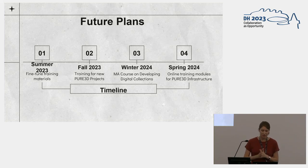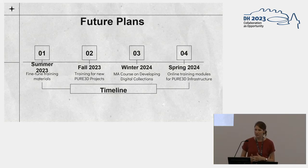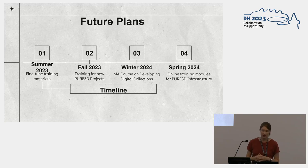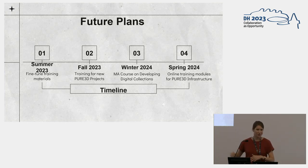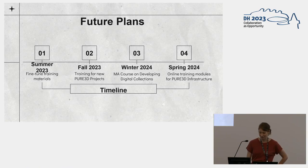Future plans for training include fine-tuning training materials and workshops for the new set of Pure3D editors, as we have a call for new 3D projects. We are conglomerating knowledge about Voyager into the existing Smithsonian GitHub documentation page, providing all Voyager users with a single source of knowledge. In the winter teaching term, we will incorporate these 3D editing concepts into a university master's course on developing digital collections. And in anticipation of the infrastructure launch, we will develop online training materials for future editors so we don't have to do this training in person.